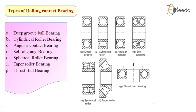Depending upon the type of the rolling element, the bearings are classified as ball bearing, cylindrical roller bearing, taper roller bearing, and needle bearing. Depending upon the direction of the load, the bearings are also classified as radial bearings and thrust bearings.